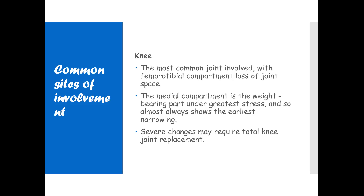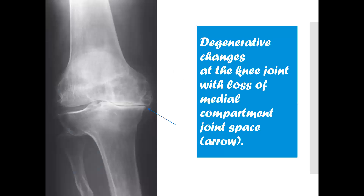The knee is the most common joint involved, with femoral-tibial compartment loss of joint space. The medial compartment is the weight-bearing part under greater stress, and so almost always shows the earliest narrowing. Severe changes may require total knee joint replacement. This diagram shows degenerative changes at the knee joint with loss of medial compartment joint space.